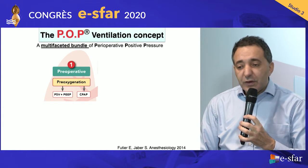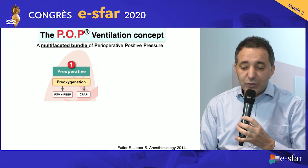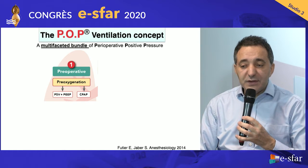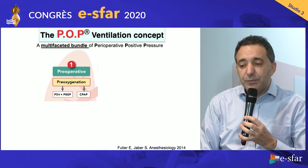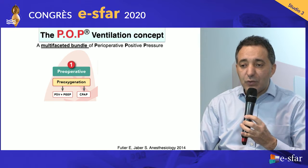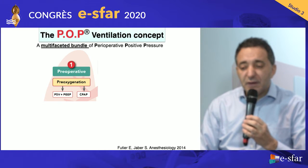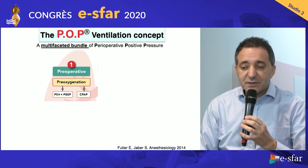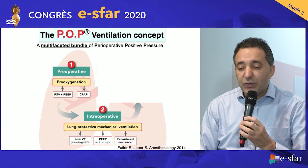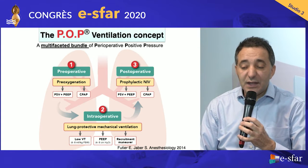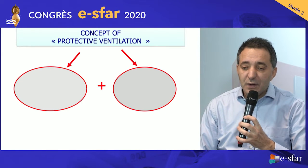The intraoperative strategy is the POP ventilation approach — Perioperative Positive Pressure — developed by our French group with Emmanuel Futier. This means applying preventive positive pressure throughout the procedure to maintain open lungs and avoid alveolar collapse. It starts with positive pre-oxygenation, followed by intraoperative lung-protective ventilation, and at least prophylactic non-invasive ventilation or CPAP after surgery.